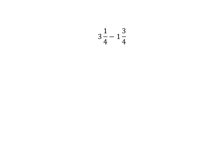Let's check. 3 times 4 is 12 plus 1 gives me 13. So, this is 13 over 4 and then 1 and 3 quarters. 1 times 4 is 4 plus 3 is 7. That's 7 over 4. So, now I've got 13 quarters and I'm taking away 7 quarters. Well, 13 minus 7 just gives me 6 which is 6 quarters. And I can turn that into a mixed number.